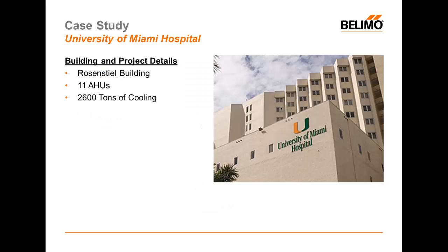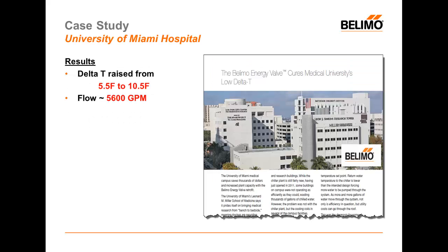Another high-profile project using the Belimo energy valve was at the University of Miami Hospital, specifically at the Rosensteel building. Energy valves were installed on 11 air handler units encompassing about 2,600 tons of cooling. Previous to Delta-T management, they were using over 10,000 gallons a minute to serve this 2,600-ton load, and the average Delta-T was 5.5. After implementing Delta-T management, the Delta-T was raised from 5.5 to 10.5 degrees Fahrenheit, and flow was reduced down to about 5,600 GPM.